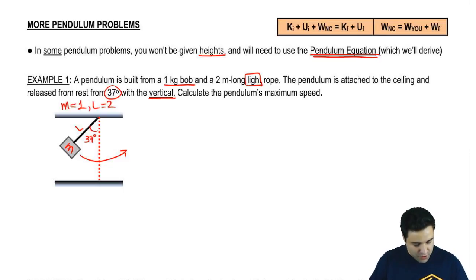This pendulum is going to go from here to here at the same exact height if it starts at 37 degrees there. At the other end here it's going to make an angle of 37 degrees as well. I'm going to call this beginning point here A, the bottom here B, and then the other side where it stops C.